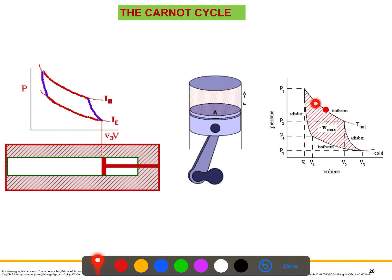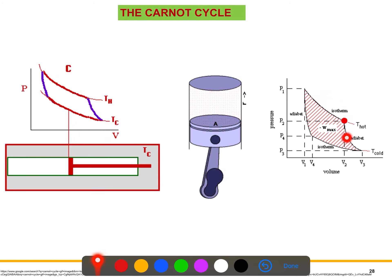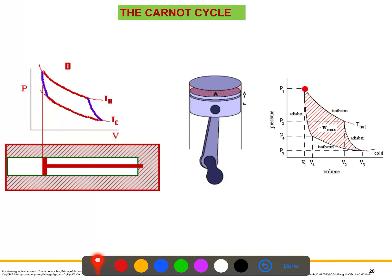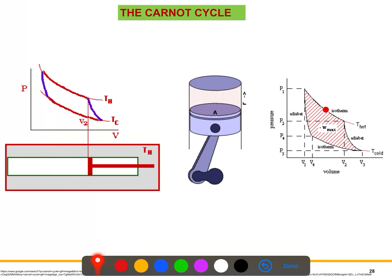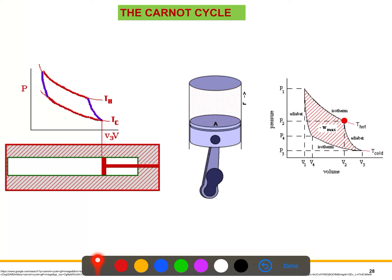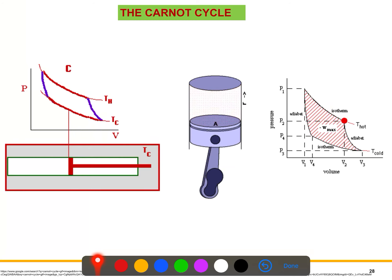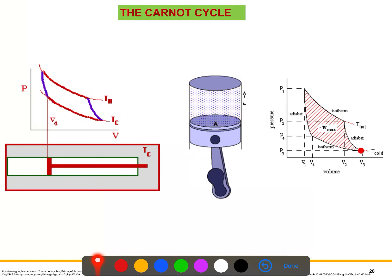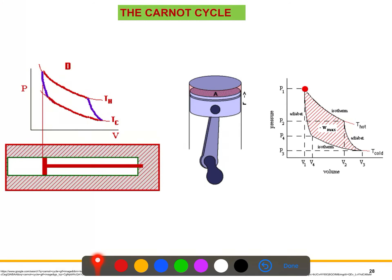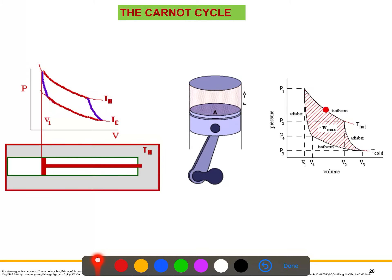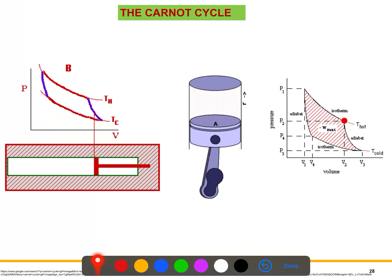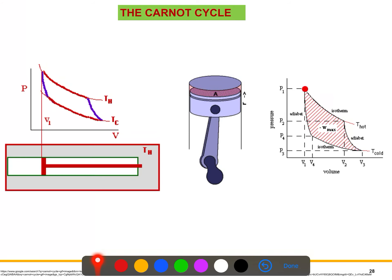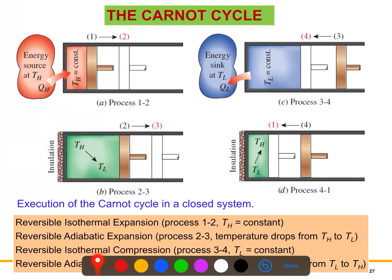The isothermal processes are process one and three, and the adiabatic processes are two and four. If you look closely, you can see from both animations — the left-hand side and the right-hand side — how it is working. Both animations are showing the four reversible processes. Now I'm going to discuss how it works with more explanation.